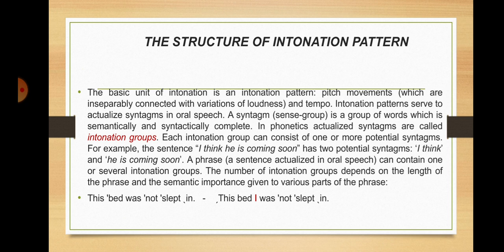Each intonation group can consist of one or more potential syntagmas. For example, in the sentence 'I think he is coming soon,' it has two potential syntagmas: 'I think' and 'he is coming soon.' A phrase can contain one or several intonation groups. The number of intonation groups depends on the length of the phrase and the semantic importance given to various parts of the phrase. For instance, the same sentence can consist of one intonation group — 'This bed was not slept in' — or two, if intonation divides it: 'This bed was not slept in.'